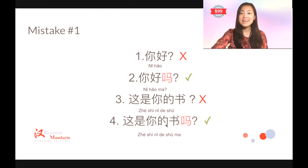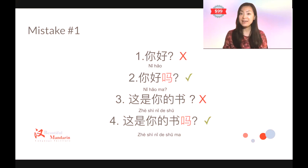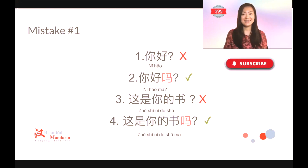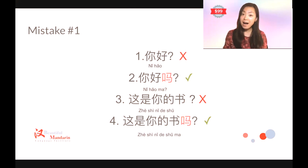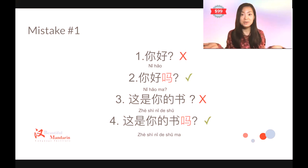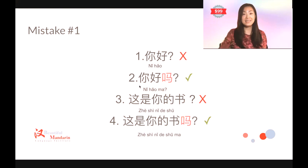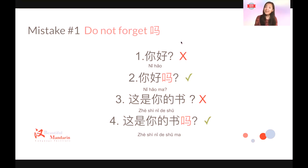All of those are yes or no questions, which means you're going to end up with the question word 吗 (ma). As a beginner, the first way you learn to greet people is: are you good? 你好吗? But many students forget to use the question word 吗. They just end up with 你好. If you say 你好, I'll think you're just saying hello to me — so I'll say 你好 back, but not really answering your question. What you should say is 你好吗? And the answer could be: 我很好 (I'm very good), 我还行 (I'm okay), 我不错 (I'm not bad).